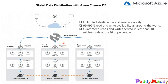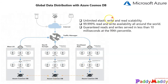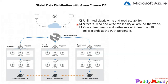The key benefits of global distribution include high availability, unlimited elastic read and write scalability, and 99.999% read and write availability worldwide. You get guaranteed read and write latency served in less than 10 milliseconds at the 99th percentile. You can build highly responsive and highly available applications, maintain business continuity during regional outages, and Cosmos Database supports automatic failover during regional outages.